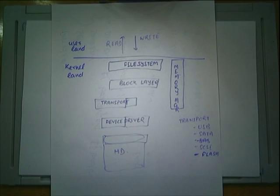The block layer understands that a request has come for SDA. When your device driver boots up, it registers itself saying: I am the device driver for SDA. Similarly, if you plug in a USB device, another driver runs in the kernel and tells the kernel: I am the driver for SDB. So the block layer knows which driver owns which device, and sends the buffer to the correct device driver.